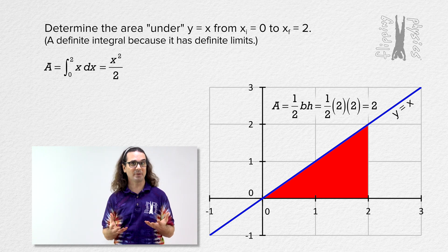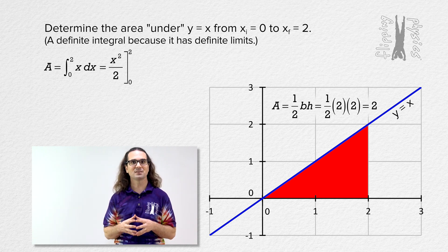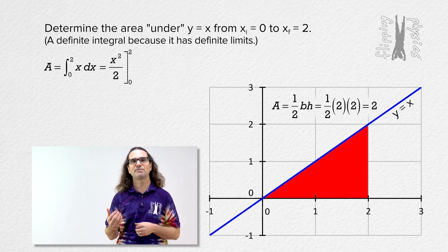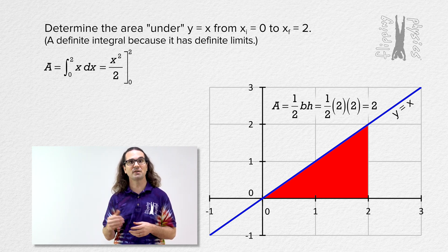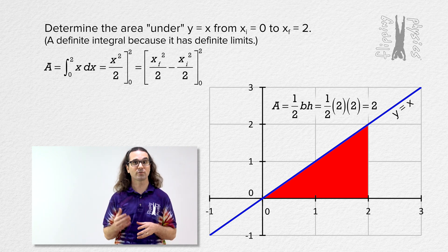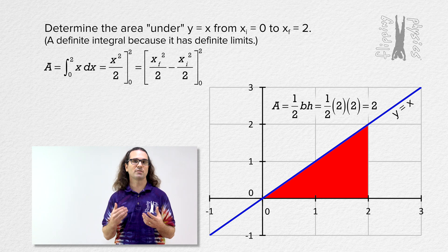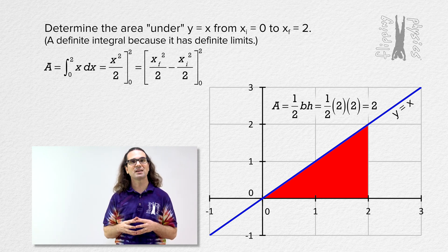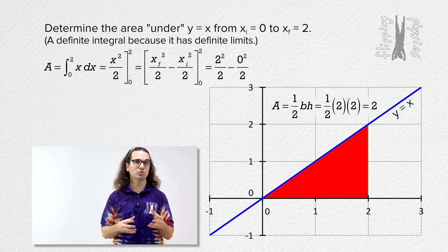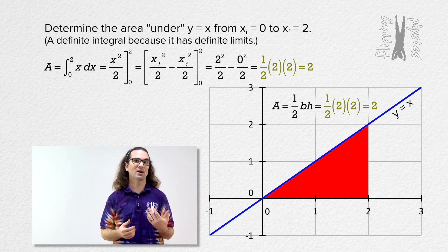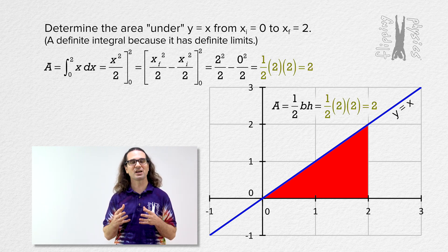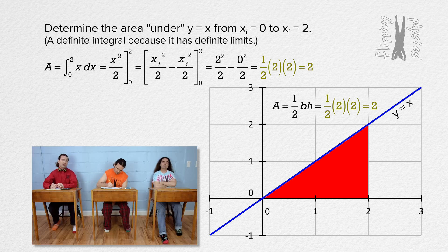The integral of x equals x squared over 2. We retain the limits using a closed bracket with the initial limit of 0 on the bottom and the final limit of 2 on the top. Then we take the final of this expression minus the initial: position final squared over 2 minus position initial squared over 2, from 0 to 2. Substituting in our initial and final values gives us 2 squared over 2 minus 0 squared over 2, which equals one half times 2 times 2, which equals 2. That is the exact same area we solved for using the area of a triangle equation. So we showed that the integral did actually solve for the same area under the function.